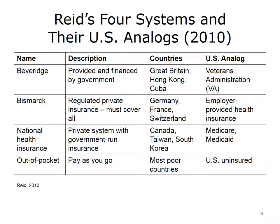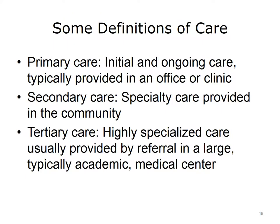One point that Reid wanted to make is that there are different models, and the U.S. has within its system people covered by each of these four models. It is also important to understand the different types of care: primary, secondary, and tertiary. Primary care is that initial and ongoing care typically provided in a physician's office or clinic, sometimes by non-physician practitioners, characterized by an ongoing relationship between the patient and health care provider.